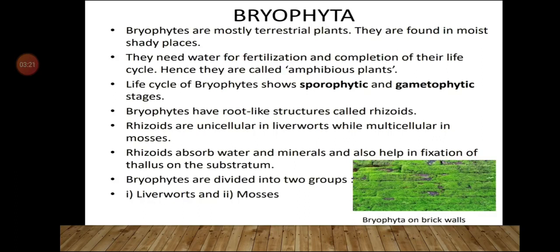The life cycle of bryophytes shows sporophytic and gametophytic stages. The sporophytic stage is when they produce spores, and the gametophytic stage is when they produce gametes — male and female gametes. The life cycle alternates between both stages: one time sporophytic generation and the next time gametophytic generation.